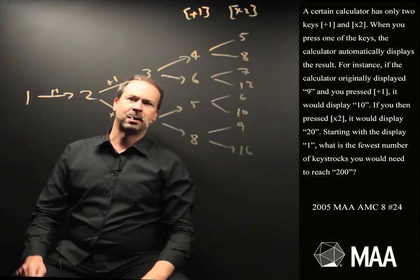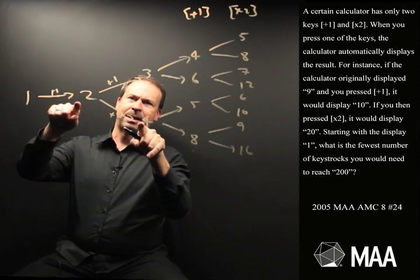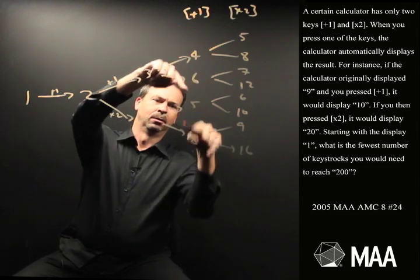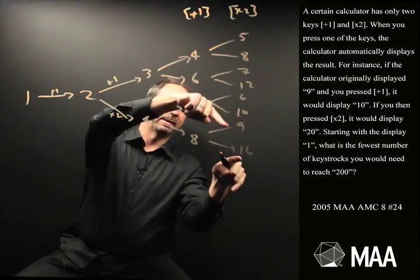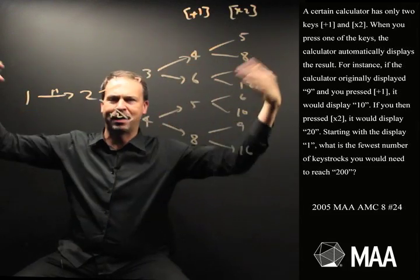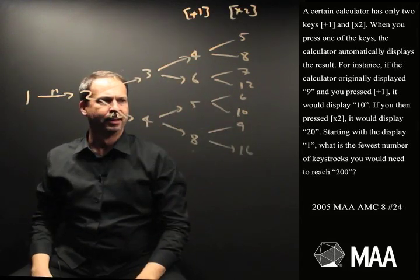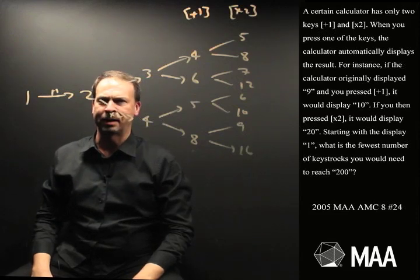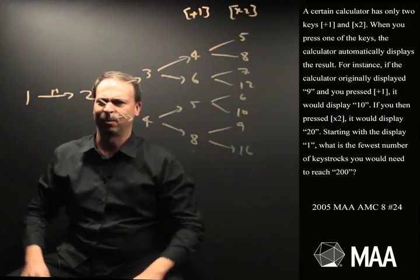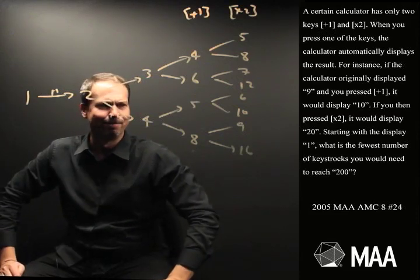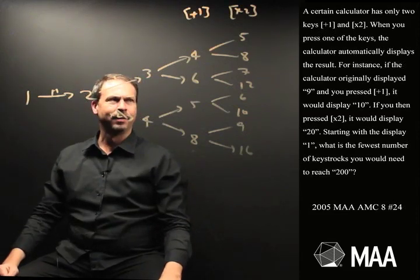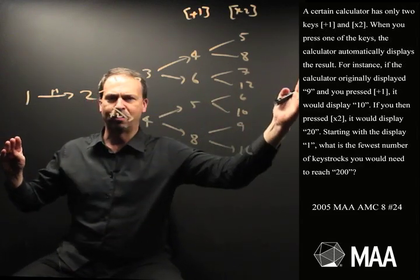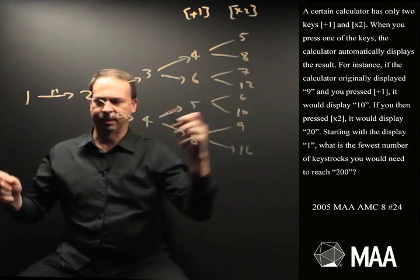One thing I notice is that doubling seems to always be more powerful than adding 1 — it gets me bigger quicker. So maybe doing lots of times 2s is a good way to get up to 200. I'm not quite sure if that does it for me. Actually, I want to get to 200 — maybe if I start backwards.